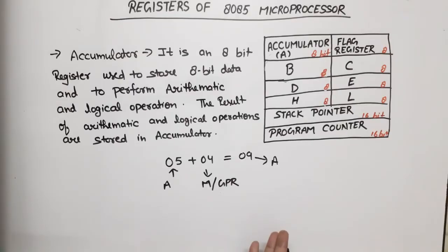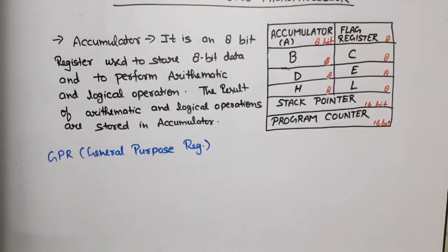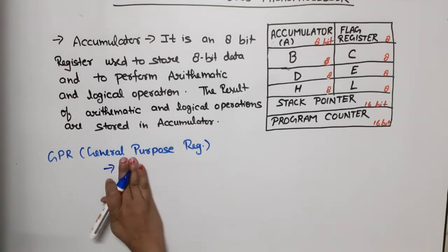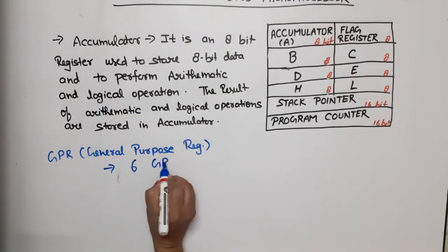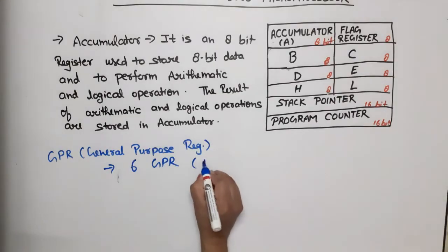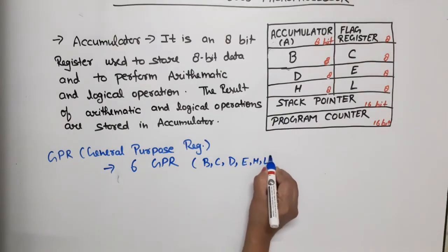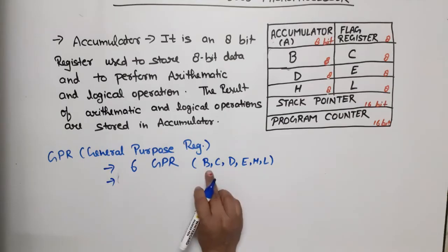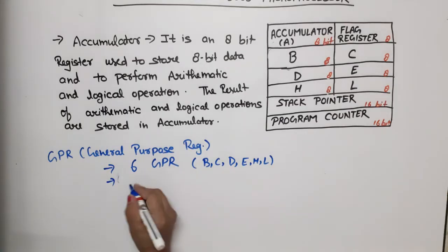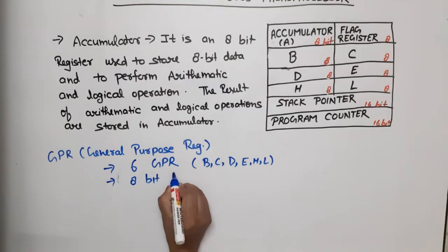Next, GPR stands for General Purpose Register, which is available for users as programmers. We have 6 general purpose registers available in 8085: B, C, D, E, H, and L. All these registers are 8-bit registers.